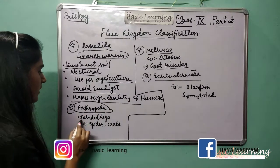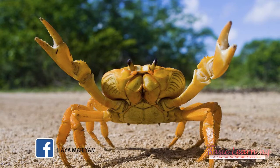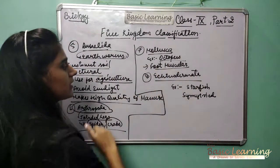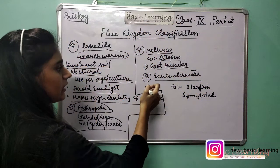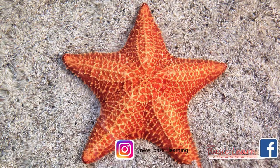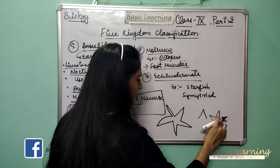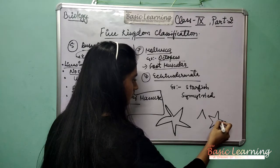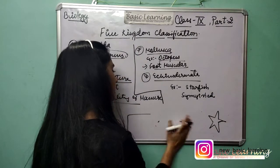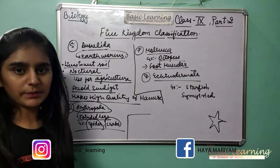The sixth phylum is Arthropoda — jointed legs. Examples: spiders and crabs, which have jointed legs. The seventh is Mollusca — example: octopus, which has a muscular foot that helps it move. The eighth is Echinodermata — example: starfish, which are symmetrical in shape, like a star shape.